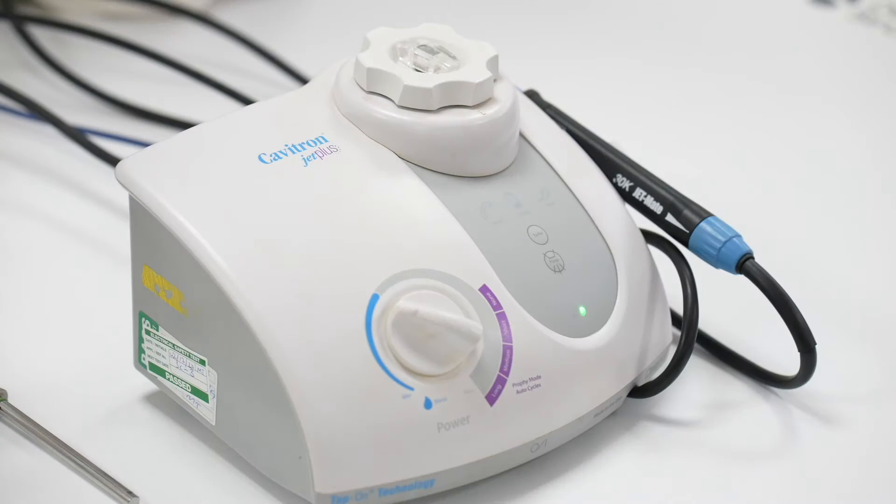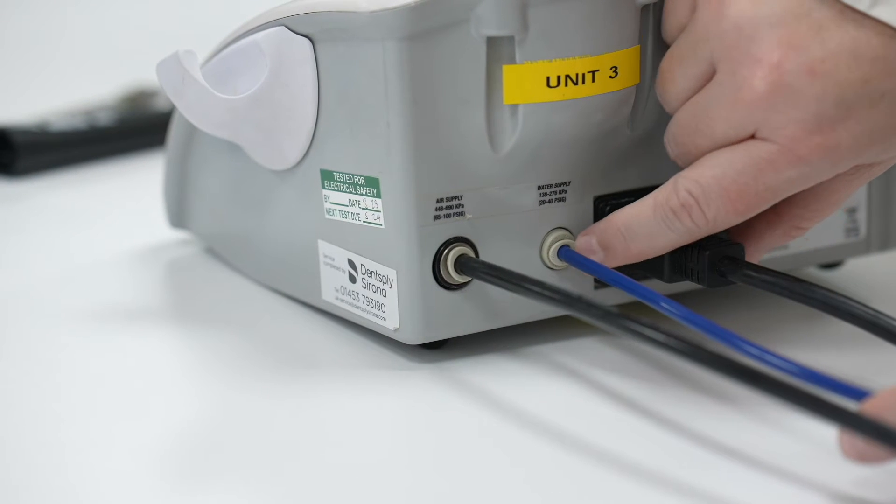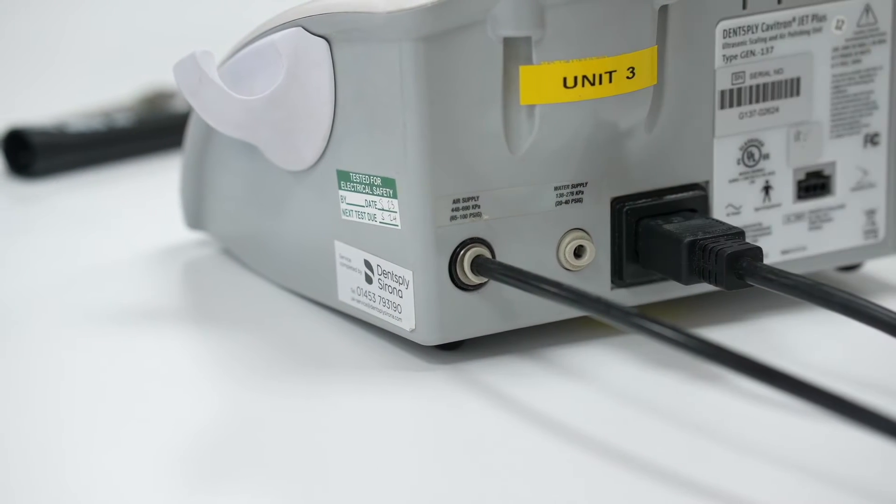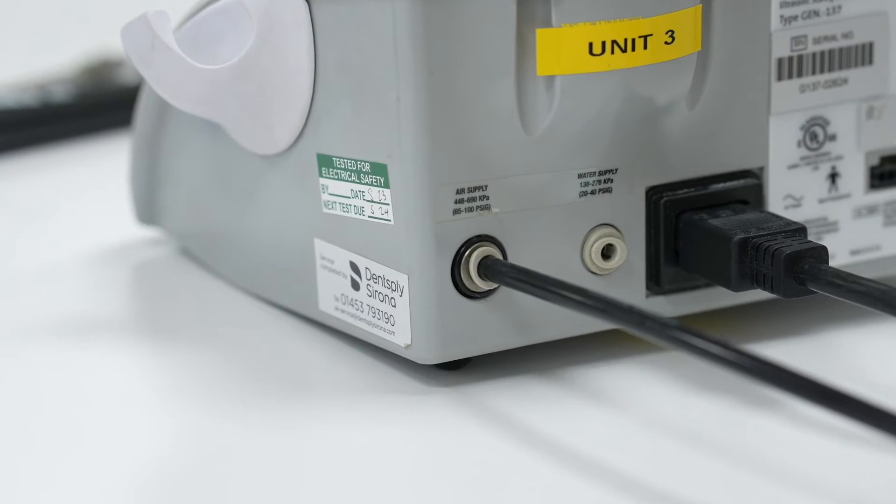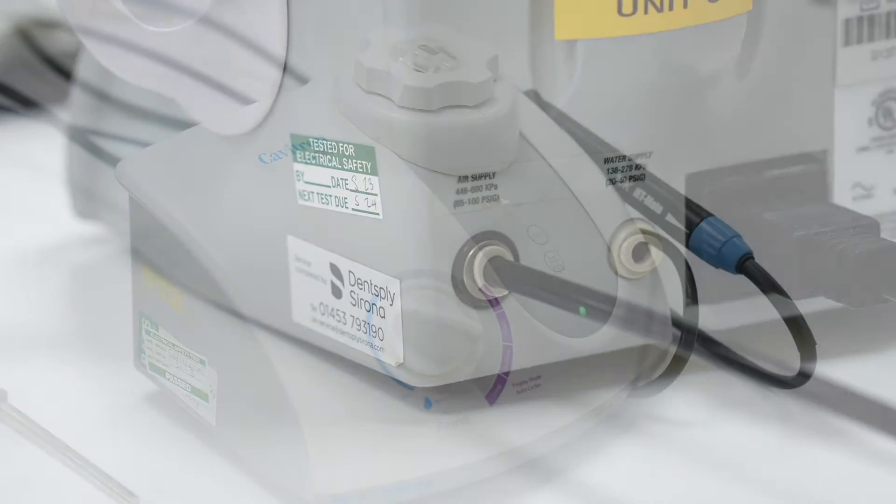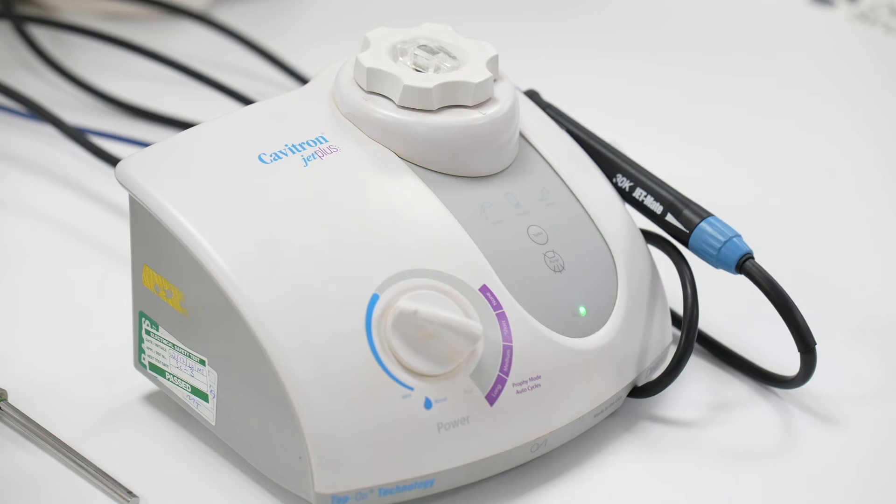On the back of the unit there is a white ring which indicates and is labelled water and a black ring indicating and labelled as air. It is simple to get it right. Simply push in the blue water line to the white ring and the black air cable into the black ring.